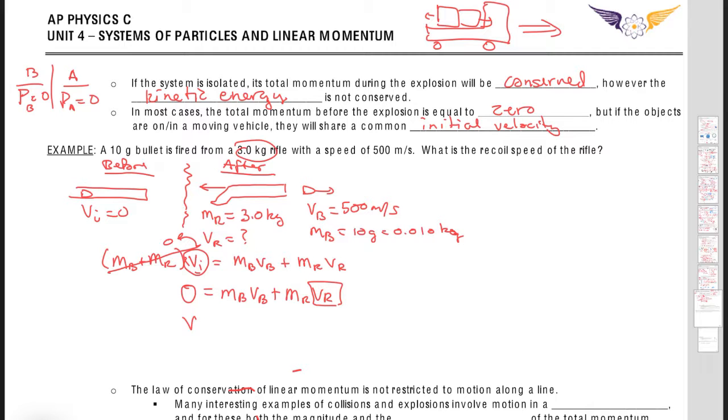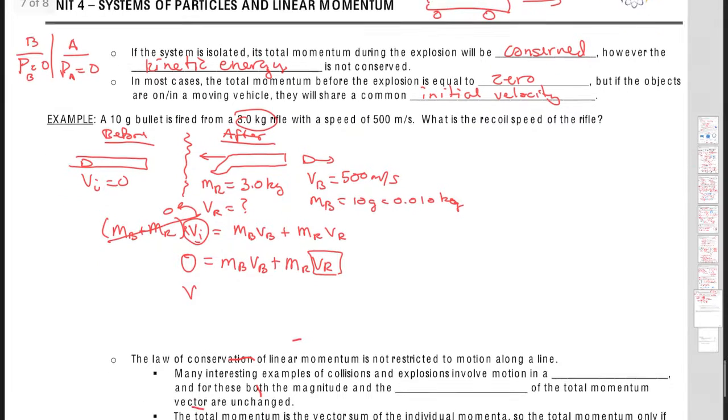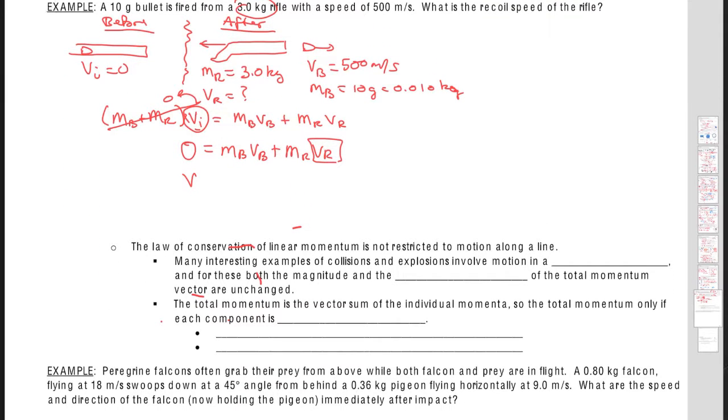And so really what happens is, let me get rid of these stray red marker pieces here. Anytime you have an explosion type question, your equation is basically going to be something that looks like this. Okay, and this is to assume that the bullet's going to go off in our positive direction.